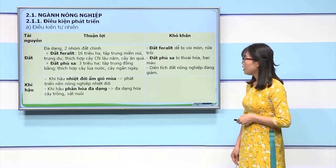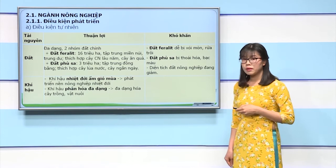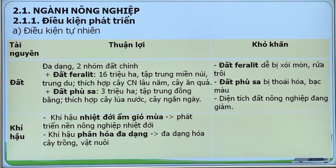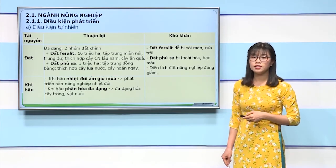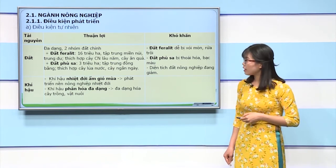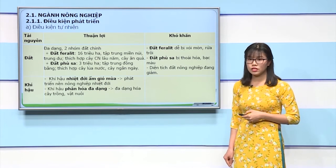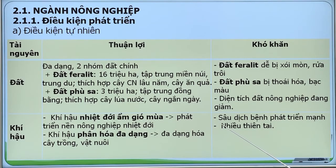Về tài nguyên khí hậu, khí hậu của nước ta có đặc điểm nhiệt đới ẩm gió mùa, tạo điều kiện để phát triển nền nông nghiệp nhiệt đới hướng ra xuất khẩu. Khí hậu phân hóa đa dạng theo độ cao, theo Bắc Nam và theo mùa, tạo thuận lợi để đa dạng hóa cơ cấu cây trồng vật nuôi, có thể trồng các cây có nguồn gốc cận nhiệt như cây chè, cây rau ưa lạnh. Bên cạnh thuận lợi, khí hậu cũng gây nhiều khó khăn: đặc điểm nhiệt đới ẩm gió mùa tạo điều kiện cho sâu dịch bệnh phát triển mạnh; có nhiều thiên tai như bão, gió tây khô nóng, rét đậm, rét hại, sương muối, băng giá ảnh hưởng đến sản xuất.